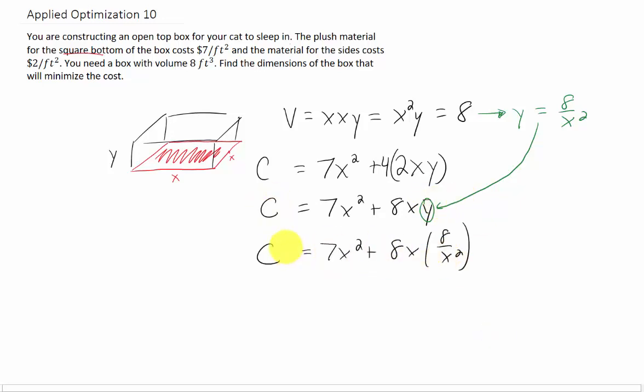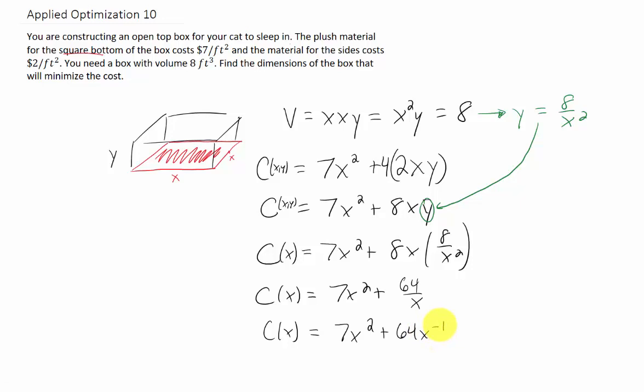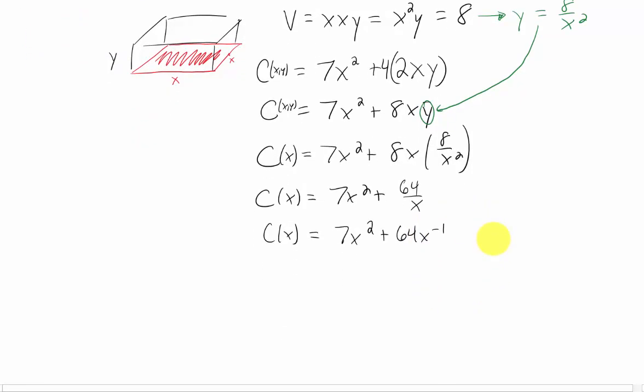This is now a function of only X, whereas before we had a function of X and Y. We can simplify one more step to rewrite this X in the denominator as X^(-1). Now if we want to minimize this cost, we need to find critical points. That means take a first derivative.